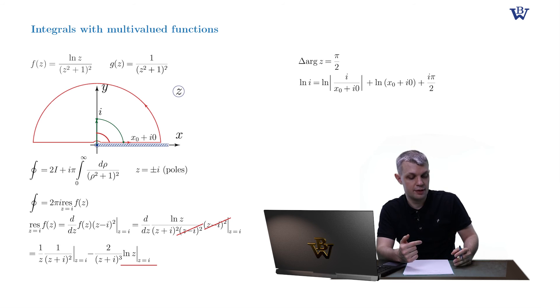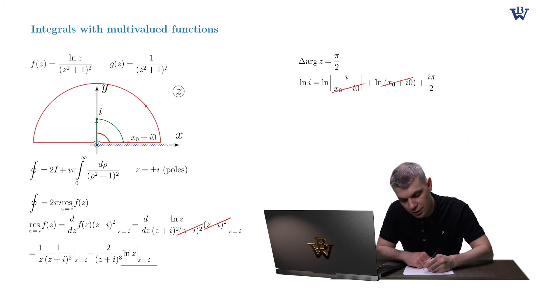Now as before, the log of the modulus of x naught plus i zero and the log of x naught plus i zero are the same, so they cancel out. The log of modulus of i is simply 0. So the log of i is now just i pi by 2.